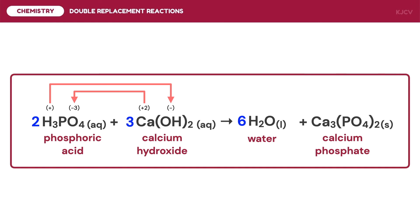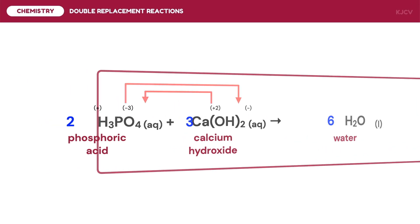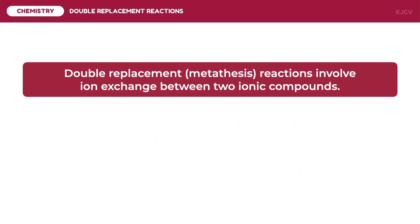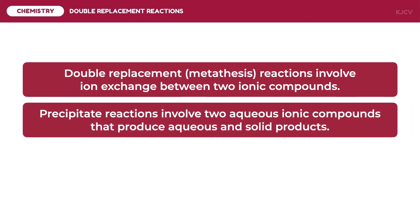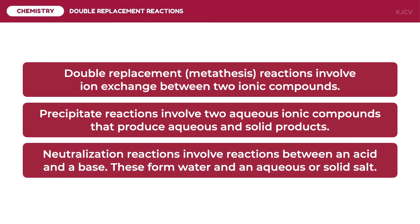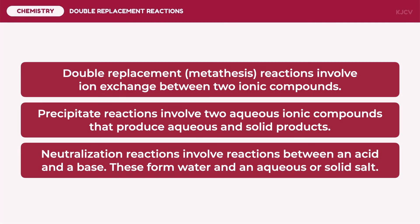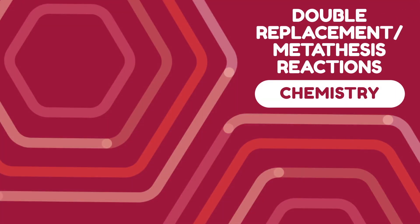In this lesson we discussed double replacement reactions. Specifically: double replacement or metathesis reactions involve ion exchange between two ionic compounds; precipitation reactions involve two aqueous ionic compounds that produce aqueous and solid products; and neutralization reactions involve reactions between an acid and a base, forming water and an aqueous or solid salt. This ends our discussion on double replacement or metathesis reactions.